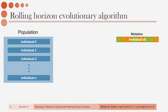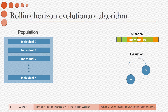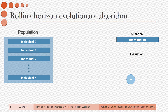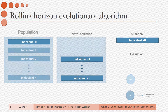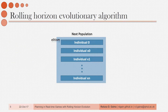We mutate this new individual by selecting one action at random and replacing it with a new random action. We evaluate this individual by going through the actions in the sequence in turn and simulating with the forward model what would happen if we actually played that action. We reach one final state that we evaluate with a heuristic, and the value of the state becomes the fitness of our individual. This process is repeated for all individuals in the population except for the first one, which is promoted directly through elitism. At the end of the evolutionary process, after a number of generations, we select the first action of the best individual in the population as the action to actually play in the game.